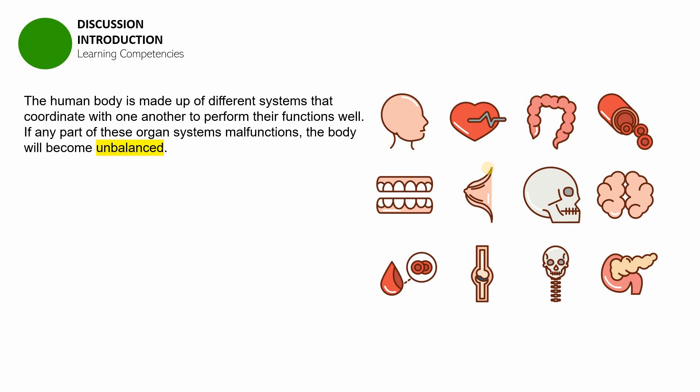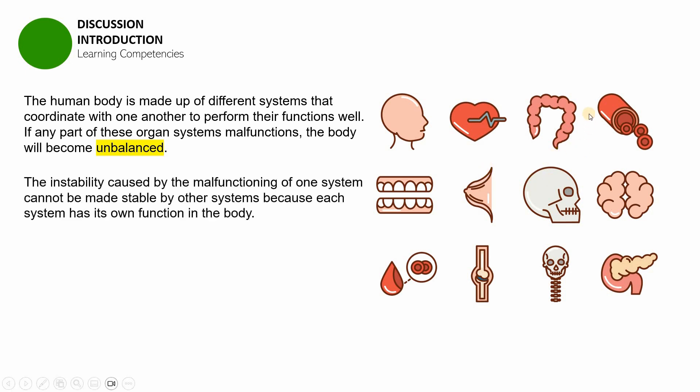However, if one organ system malfunctions — for example, if the respiratory system malfunctions — the entire body is actually affected. When the body is affected because of a malfunctioning or disorder in a particular organ system, the body is said to be in a state of imbalance. The instability caused by a particular organ system cannot be rectified or corrected by other organ systems, because each system has its own function in the body.